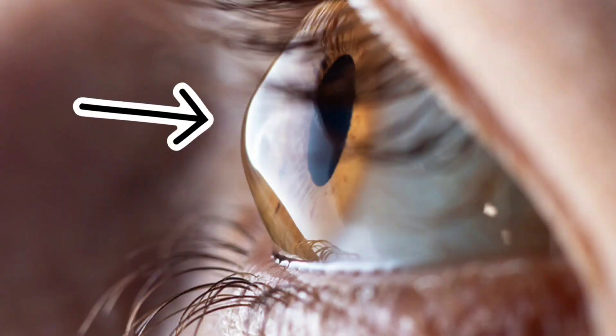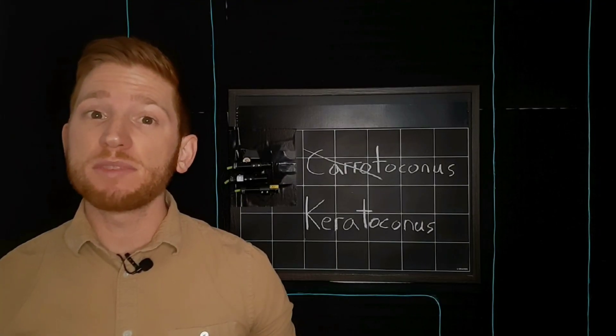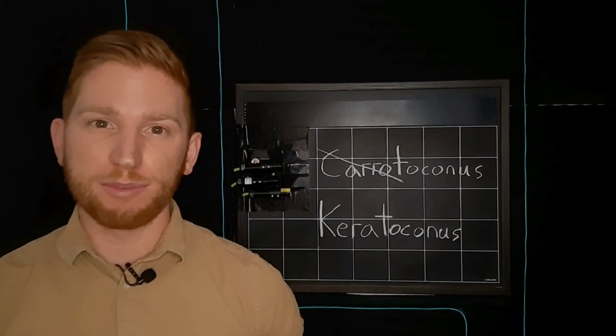Keratoconus is an eye condition that causes blurred vision, glare, and even your eyes bulging out like this. I'll break down its symptoms, causes, and treatment options.